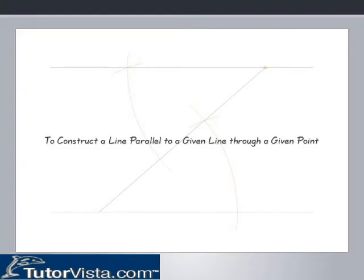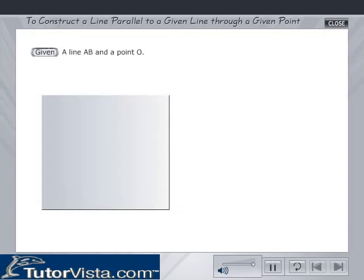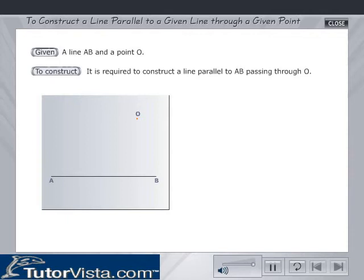To construct a line parallel to a given line through a given point. We are given a line AB and a point O outside it. It is required to construct a line parallel to AB passing through O.